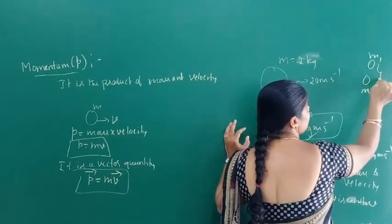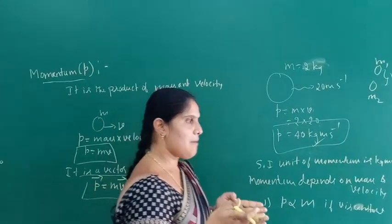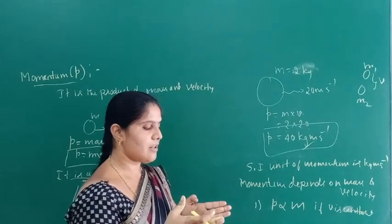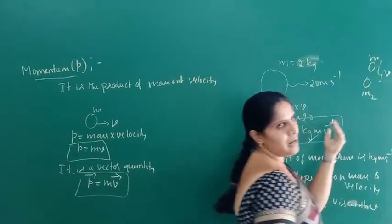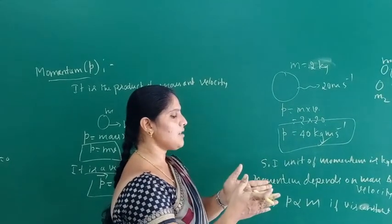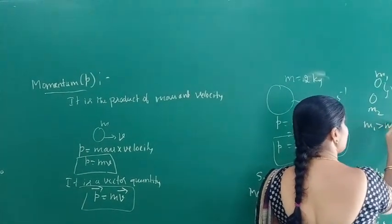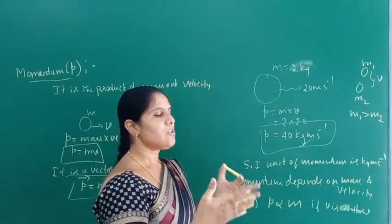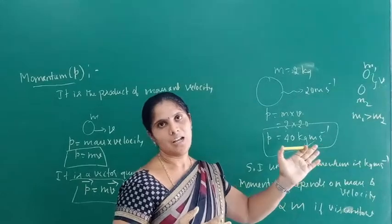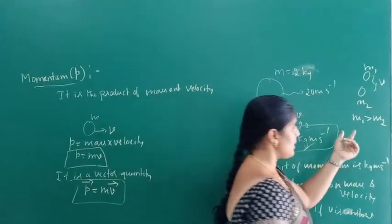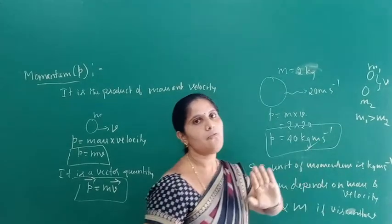Consider two bodies of different masses M1 and M2, moving with the same velocity V. Both objects are moving with the same velocity. Consider two toy cars moving with the same velocity V, but with different masses — one is M1 and another is M2. So if the cars are moving with the same velocity and M1 is greater than M2, then a greater force is required to stop the heavier car, and a smaller force is required to stop the lighter car.